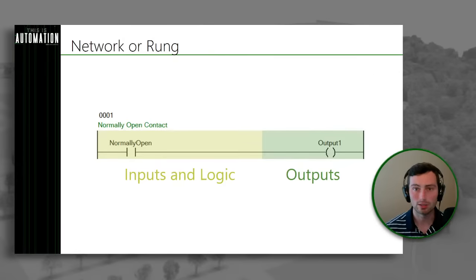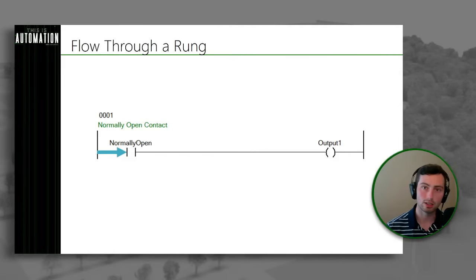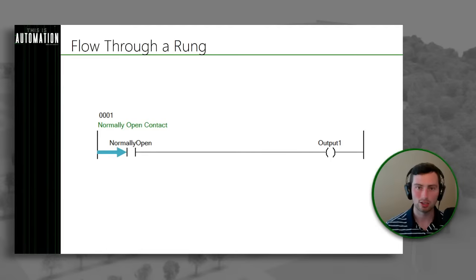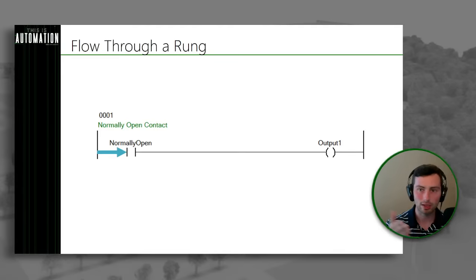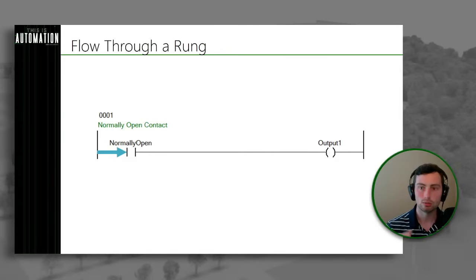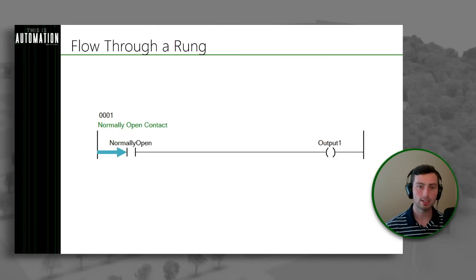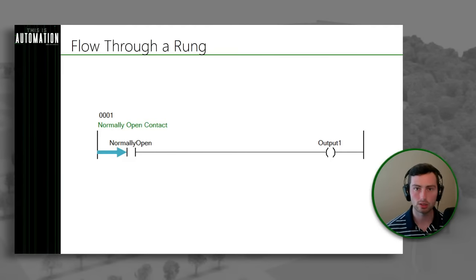The easiest way to think about a rung is taking advantage of the relay logic that it's based on. When you're building out relay logic, it's all about the flow of electricity. If we think about electricity flowing across the rungs, it's going to help you understand exactly what's happening to turn on or off a given output. On the left-hand and right-hand side, we have rails. You can think about the left-hand side as your positive rail and the right-hand side as your reference or zero-voltage rail, so power flows from left to right.